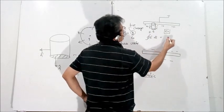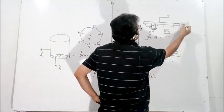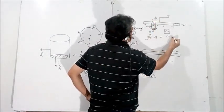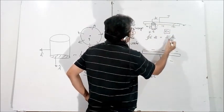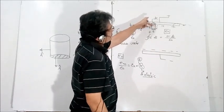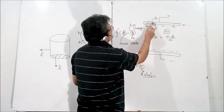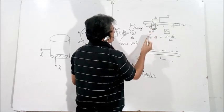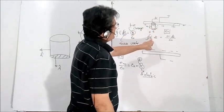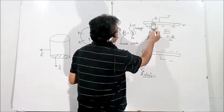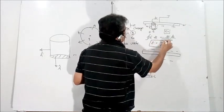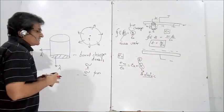The charge enclosed is Sigma times the small area dS, so E dot dS equals Sigma times dS upon epsilon naught. Since the electric field inside the conducting plate is zero and the dot product on the side surfaces is zero, only one face contributes, giving E into dS. Therefore E equals Sigma upon epsilon naught — this is the simple result for plates with no dielectric.